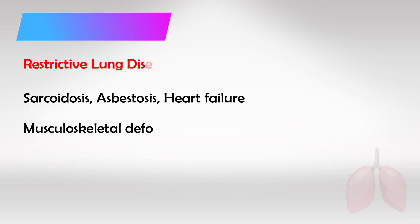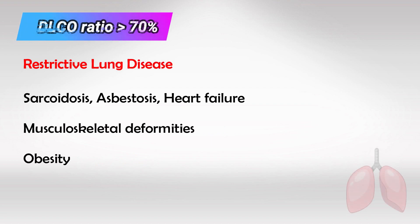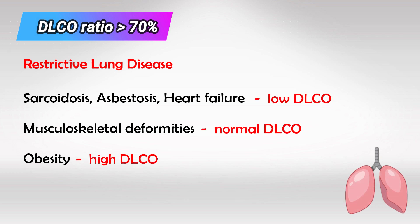If the ratio is more than 70%, it has to be a restrictive lung disease. If the DLCO is low, it has to be sarcoidosis, asbestosis, or heart failure. If it is normal, this is a muscular deformity such as scoliosis. And if it is high, this is obesity.